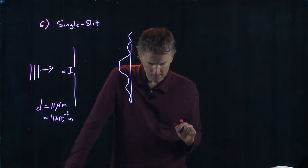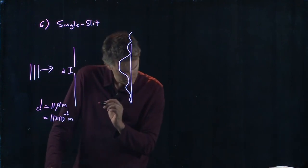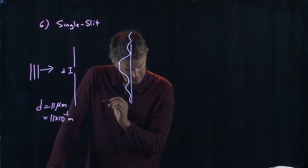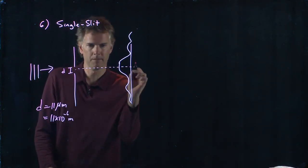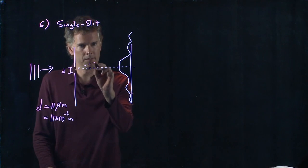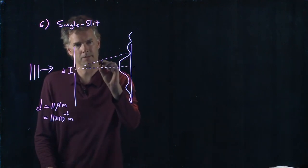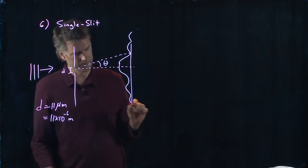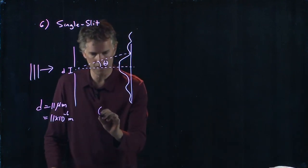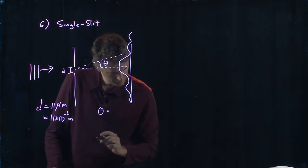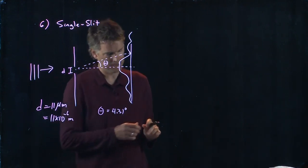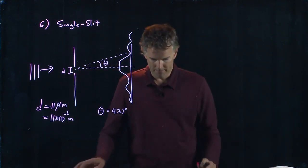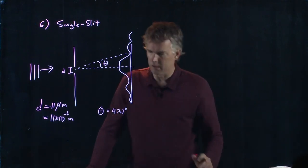And they tell us the angle to the first dark fringe. So here's the centerline, and they tell us this angle right here. And that theta is equal to 4.31 degrees. They are looking for lambda.